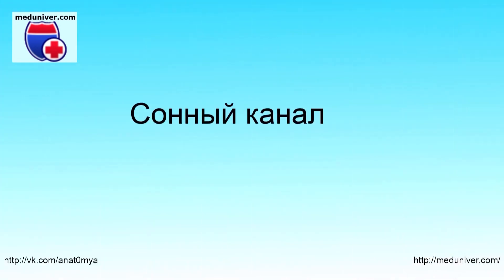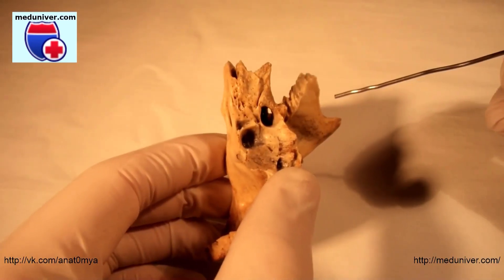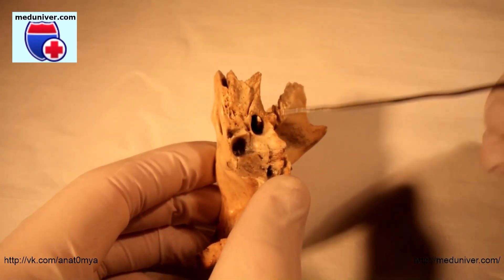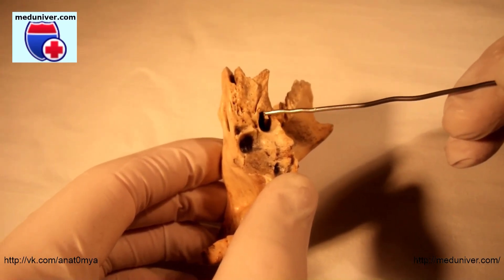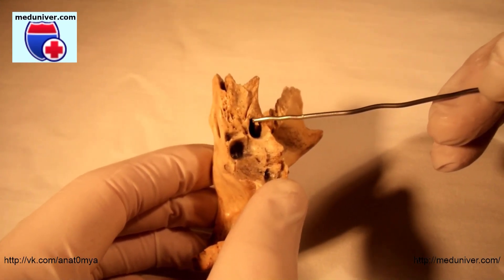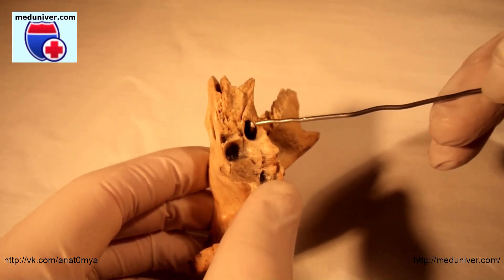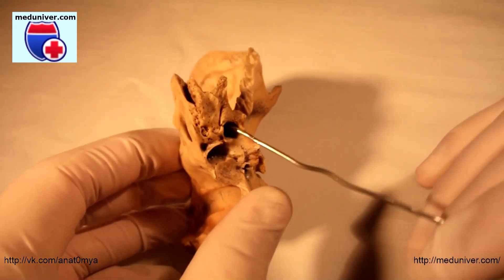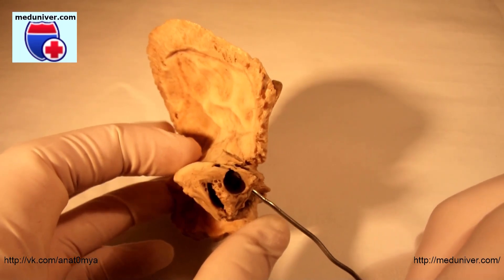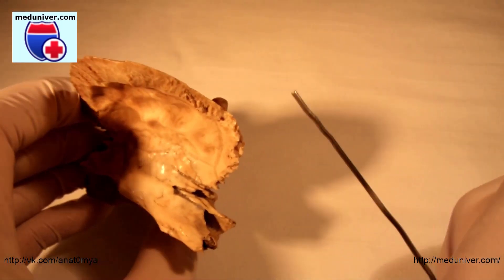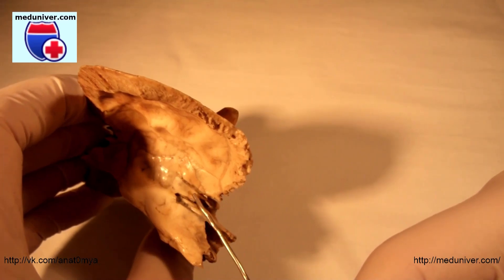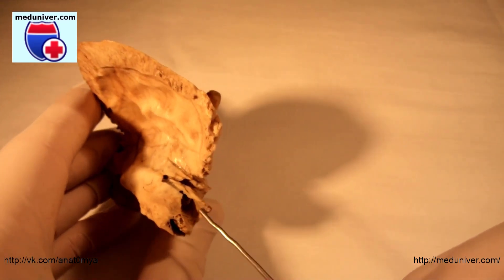Carotid canal — Canalis caroticus. The canal starts on the inferior surface of the temporal bone at the external opening of the carotid canal, foramen caroticum externum. The canal ascends at first superiorly, and then making a bend runs medially, and it ends on the apex of the pyramid at the internal opening of the carotid canal, foramen caroticum internum.